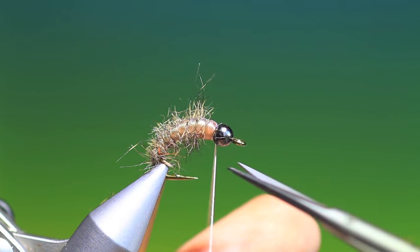Now I just want to brush out these fibers in between each turn. You don't want much here. You just want a hint of the gills, make it very buggy looking.